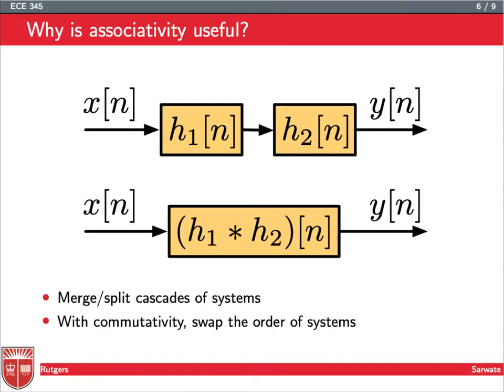What about associativity? So you can also show associativity using just the definition, but it involves like, you'll now have double sums, and it gets a little messy. So I'm not really going into the algebra here, although you can easily find that online. So the idea of associativity is useful because basically it says if I apply h1 and then h2, it's the same as applying this combo system h1 star h2, so h1 convolved with h2.